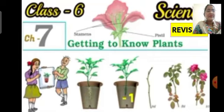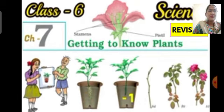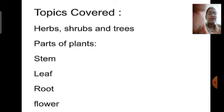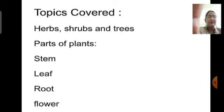Hello students, Sai Ram. In our today's session, we are going to revise the questions and answers from chapter number 7, that is 'Getting to Know Plants.' In this chapter, we have studied that plants are classified into three categories: herbs, shrubs, and trees.